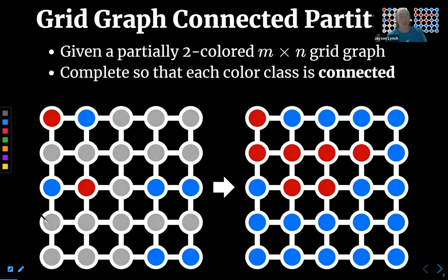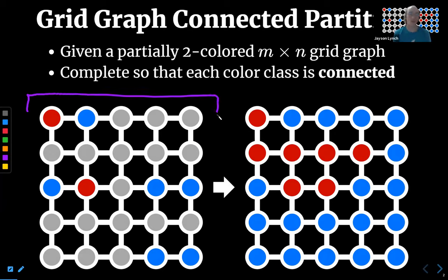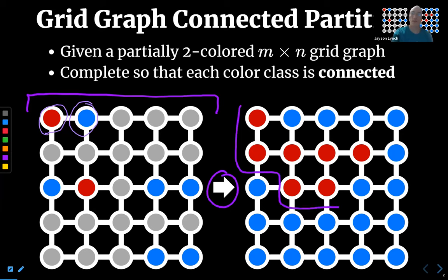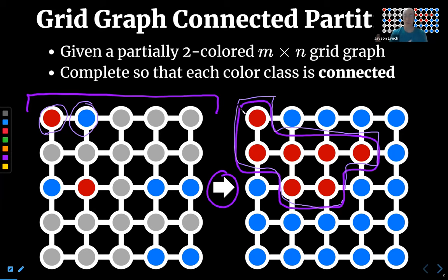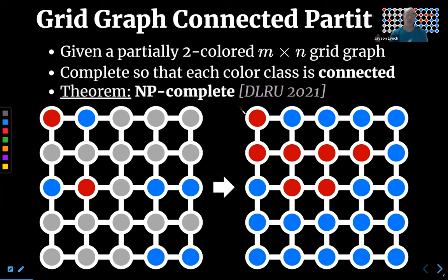We're going to start off with a different problem that's not a puzzle, but has a lot of relations to yin-yang puzzles: grid graph connected partitioning. In this problem we're given a square grid graph in which the vertices are assigned to one of two sets, either red or blue, and we're asked whether you can assign colors to all other vertices so that the resulting color classes are connected. One of the things we prove is that this problem is NP-complete.